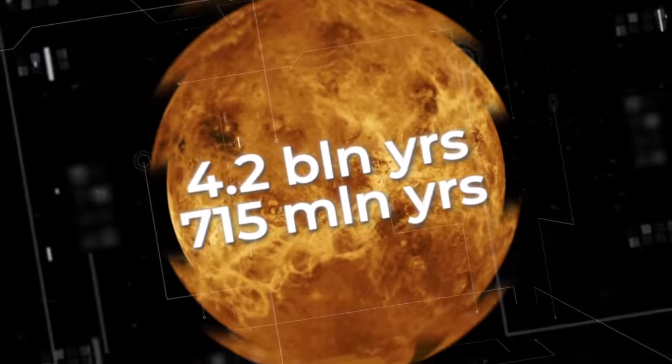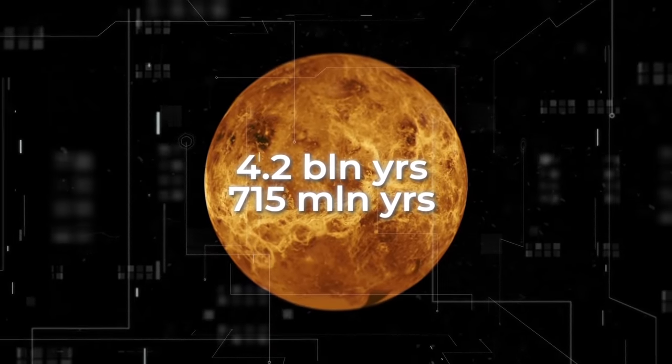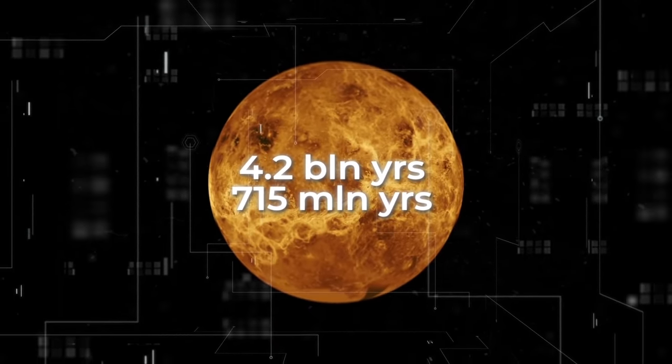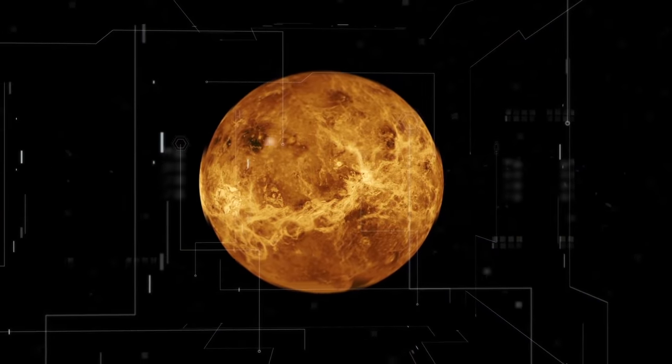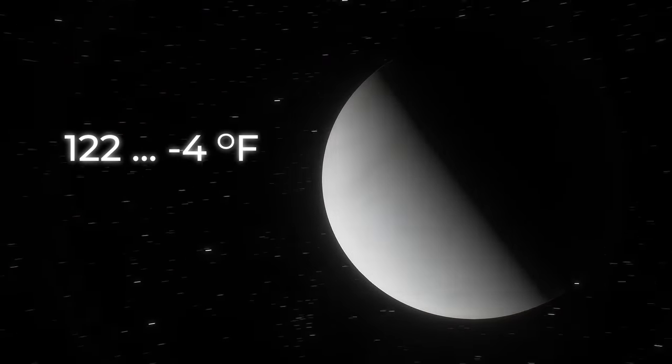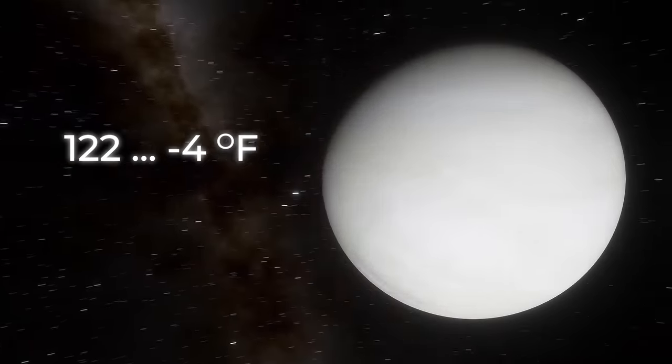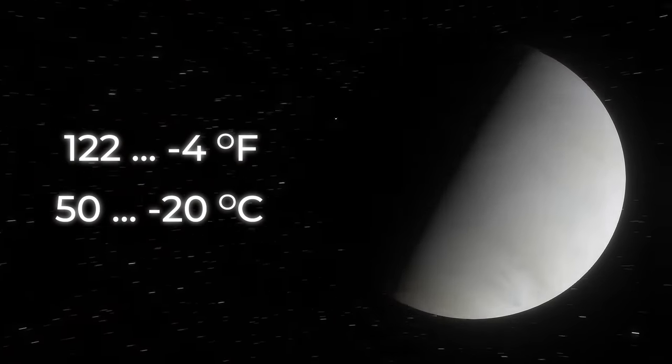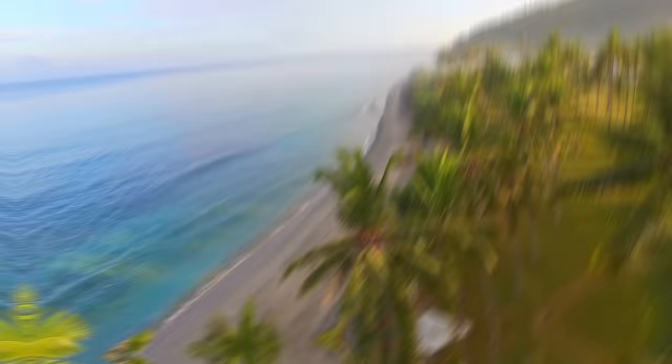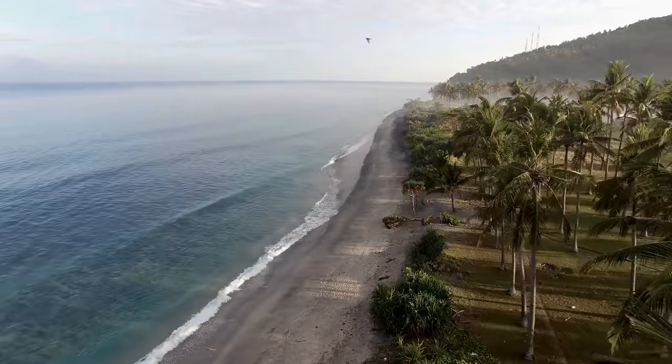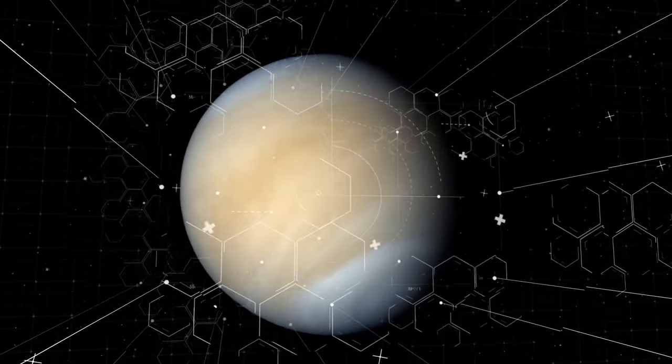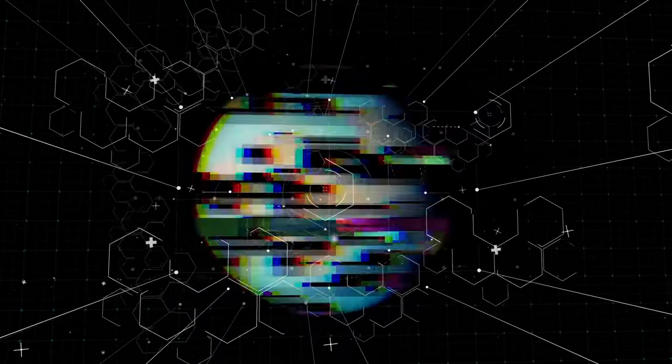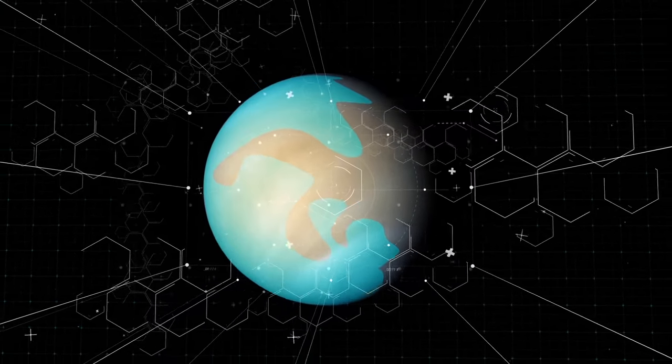Modeling Venus as it was 4.2 billion years ago and 715 million years ago, scientists found that for a period of about 3 billion years, the temperature on Venus ranged from 122 Fahrenheit to minus 4 Fahrenheit, about 50 degrees Celsius to minus 20 Celsius. It's not quite as comfortable as Earth is today, but cool and stable enough for the appearance of life.